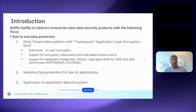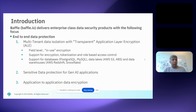Baffle delivers enterprise-class data security products with a focus on end-to-end data protection. Our first offering is multi-tenant data isolation with what we call transparent application layer encryption. We do field-level encryption, also called in-use encryption, in addition to in-transit and at-rest encryption. We support multiple encryption types, tokenization, and rule-based access control across open-source databases like Postgres, MySQL, data lakes such as AWS S3 and Azure Blob Storage, and data warehouses like Redshift and Snowflake.